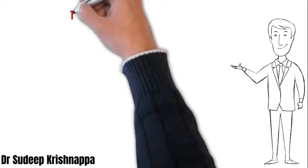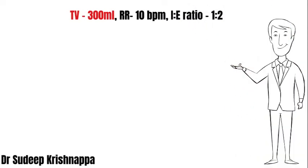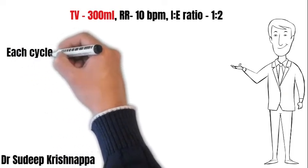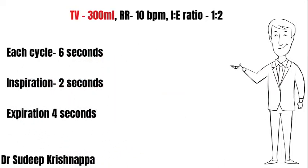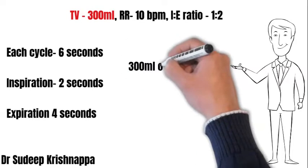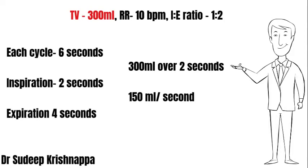We now move on to the third scenario: we reduce the tidal volume to 300 mL, keeping the respiratory rate and I:E ratio the same. The duration of each cycle remains 6 seconds, with inspiration of 2 seconds and expiration of 4 seconds. The tidal volume of 300 mL must be inspired over 2 seconds, translating to a flow rate of 150 mL per second.